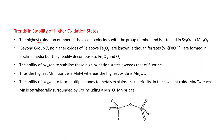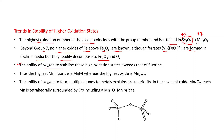The highest oxidation number in the oxides coincides with the group number, from scandium oxide to manganese oxide. For example, scandium is in group 3 so its oxidation state is +3; manganese is in group 7 so its highest oxidation state is +7. Beyond group 7, no higher oxides of Fe above Fe₂O₃ are known, although ferrates such as FeO₄²⁻ are formed in alkaline media but readily decompose to Fe₂O₃ and O₂.